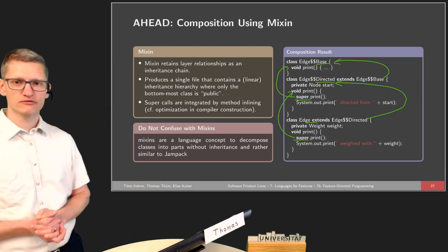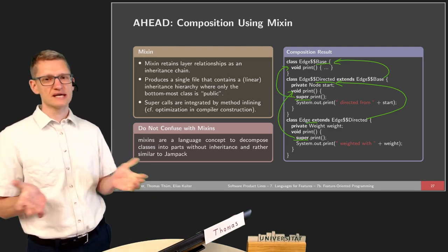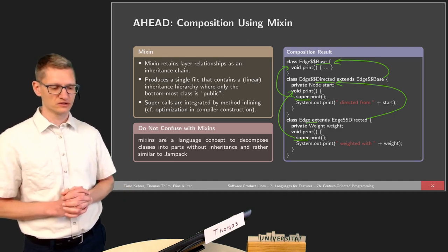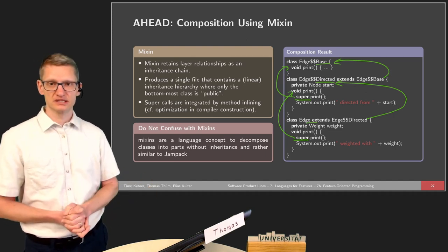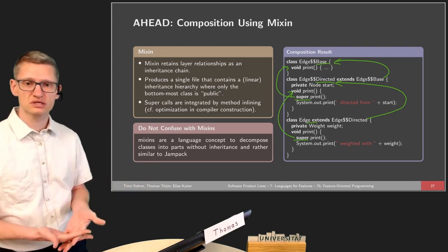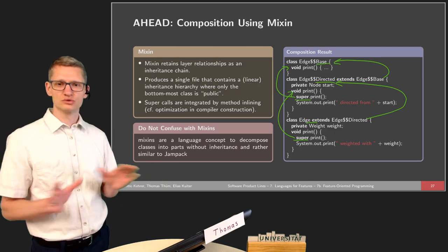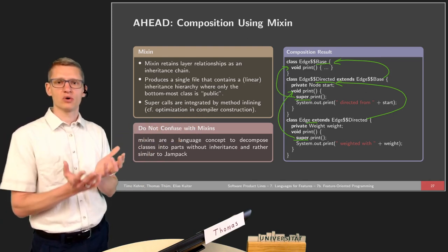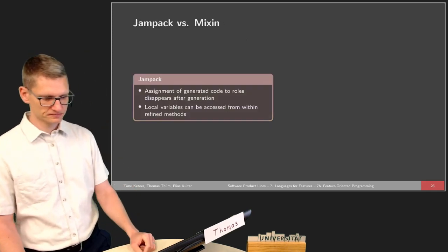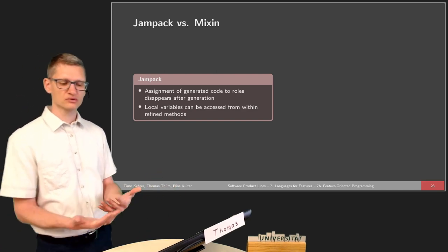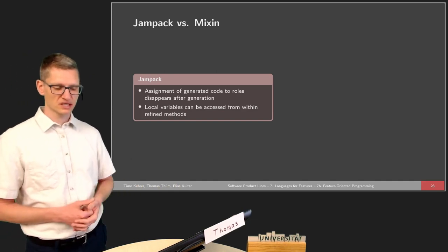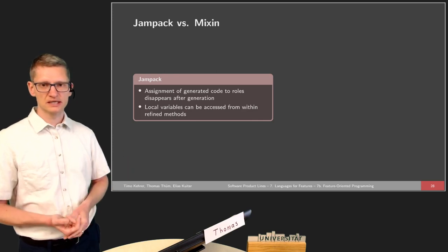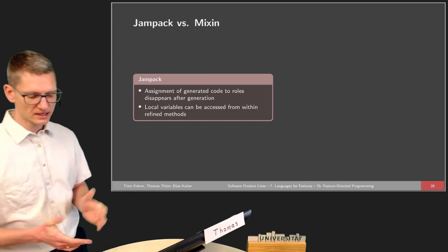The Mixin approach produces a single file but that file contains a linear inheritance hierarchy. Only the bottommost class is the public version actually meant to be accessed from the base implementation. By means of the special renaming we ensure that the last class refinement is used, and all previous extensions are called via pure object-oriented inheritance. The keyword 'Super' with a capital S is then translated into 'super' with a small s. For those familiar with Haskell, note that 'Mixin' here (without an S) is the concept used in AHEAD, while 'Mixins' are language concepts to decompose classes into parts without inheritance.